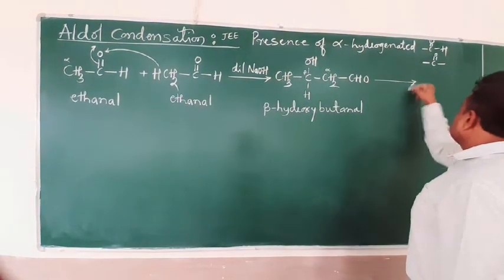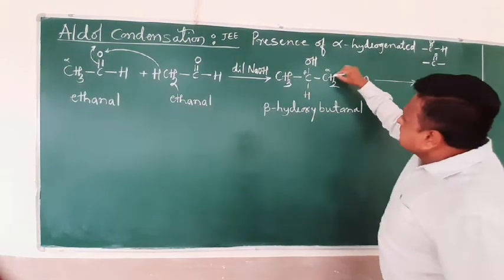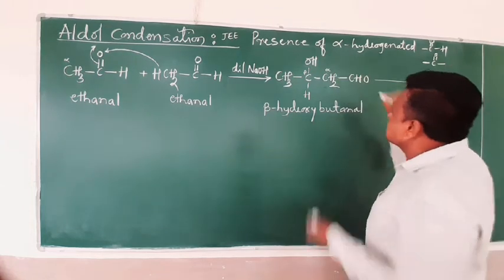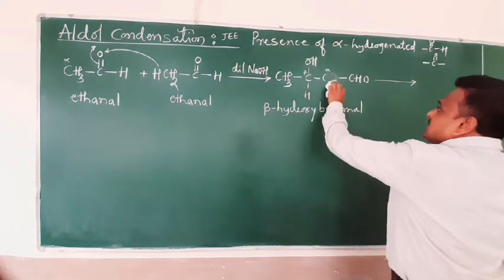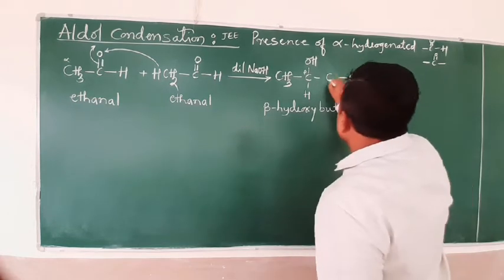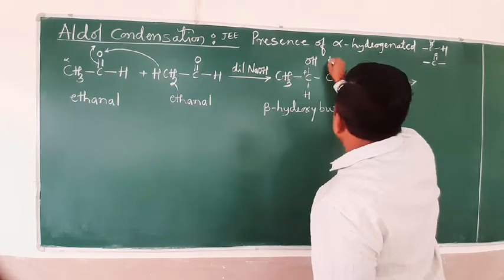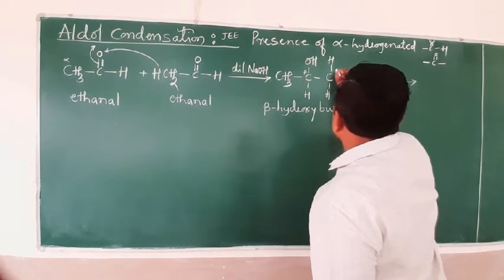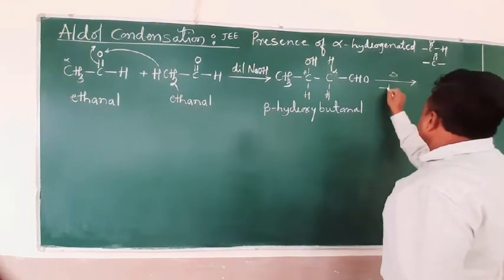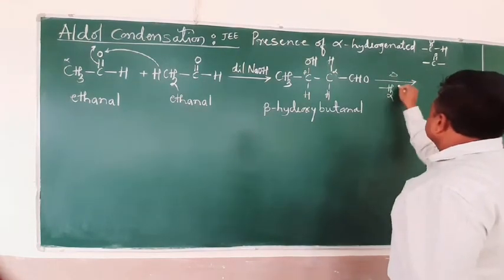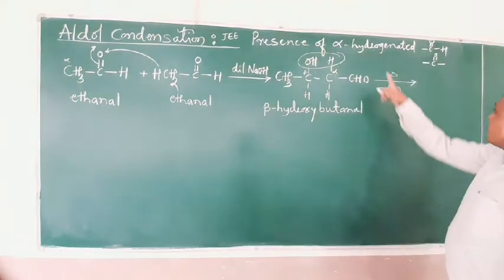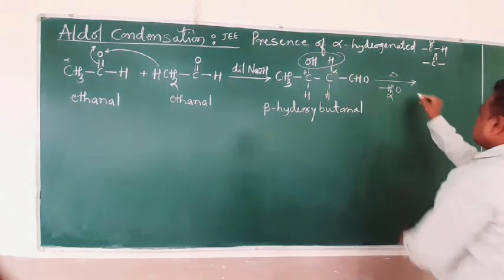After this, it undergoes heating. As a convenience, I have written CH2 like this, CH2 like this, and CH2 like this, with C and H here. After heating, there is loss of water — this is the loss of water step — and then the final product will be formed.